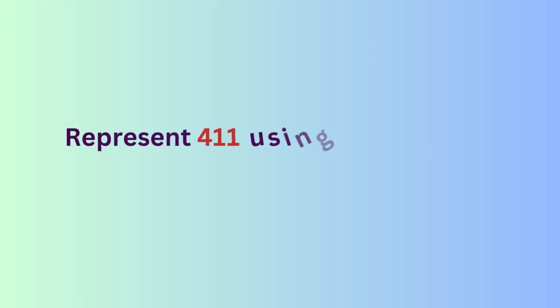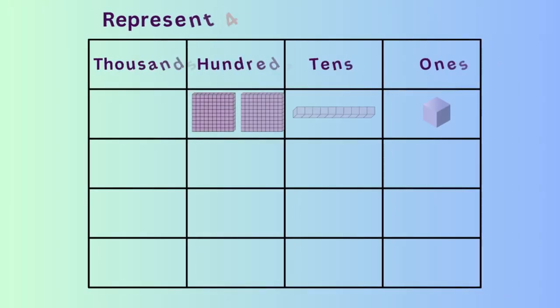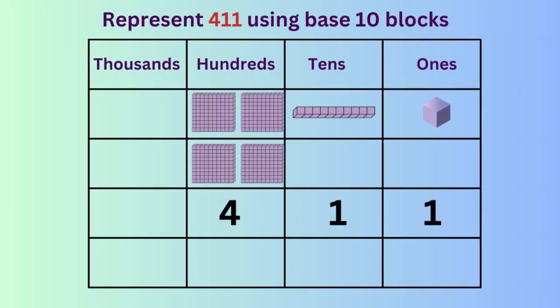Again, let's represent the number 411 using base 10 blocks. In the 100s column, we have 400, so we place four flats. In the 10s column, we have one long. And in the 1s column, we have one unit cube.